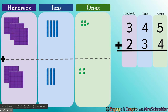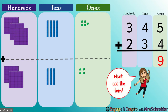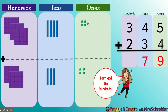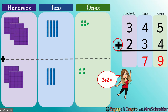Let's see if we get the same answer using our algorithm. We're always going to start on the right in the ones place. 5 plus 4 equals 9. Next we're going to add the tens. Then we have 3 hundreds plus 2 hundreds — 3 plus 2 equals 5. So 345 plus 234 equals 579 altogether. We were right, we did it!